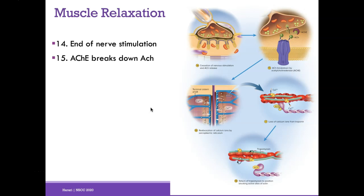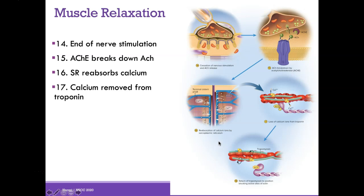At the end of nerve stimulation, there's no more signal, no more acetylcholine released. Acetylcholinesterase breaks down any leftover acetylcholine in the synaptic cleft. With no more action potential, all calcium is reabsorbed into the sarcoplasmic reticulum. Calcium is removed from troponin, so tropomyosin blocks the active site of actin — the muscle can no longer contract because actin cannot bind to myosin.